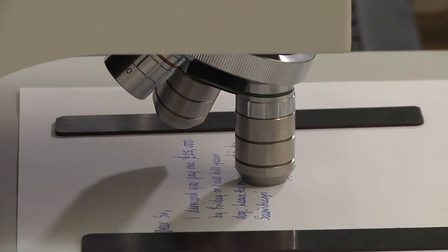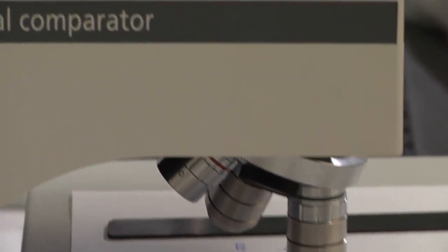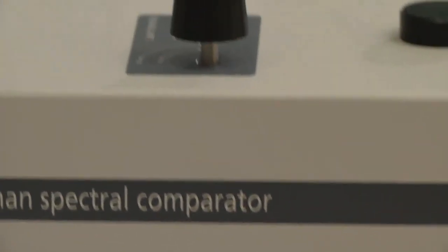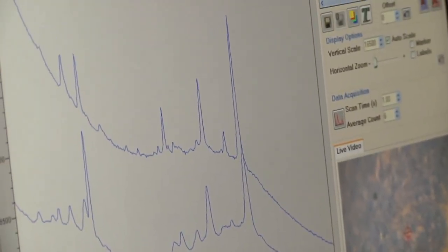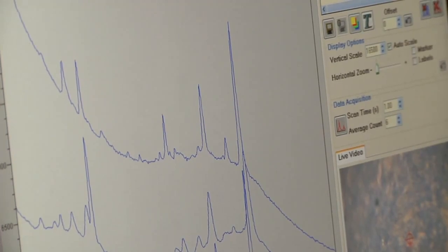The results have allowed me to place different brands of gel pen into groups based on a comparison of their spectra by eye. This information provides the forensic scientist with an idea of how common a particular ink is, as well as how useful the technique of Raman spectroscopy is for telling different brands of gel ink apart.